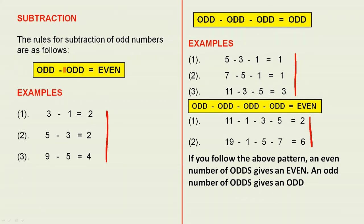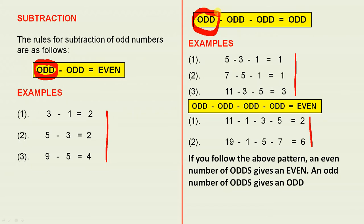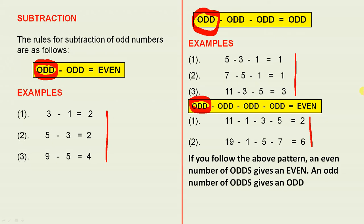Here's an even number of odds because there's only two of them — that's an even number. The pattern means you start off with an odd, and for this simple example you just subtract one odd, so there are two there — that gives an even. Here, you start off with an odd and keep subtracting odds, but there are three of those odds, so the answer is odd. And here, there are four odds — an even number of odds — so that gives you an even number. Pause the video at any time to have a closer look.